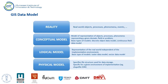When representing the real world in GIS, it is better to think in terms of different levels of generalization or abstraction. At the top level we have reality, which is made of real world phenomena and objects, including all aspects deemed relevant to a particular project. The conceptual model is a partially structured model of selected processes and objects, including a conceptual description of the types of objects and relationships between them.